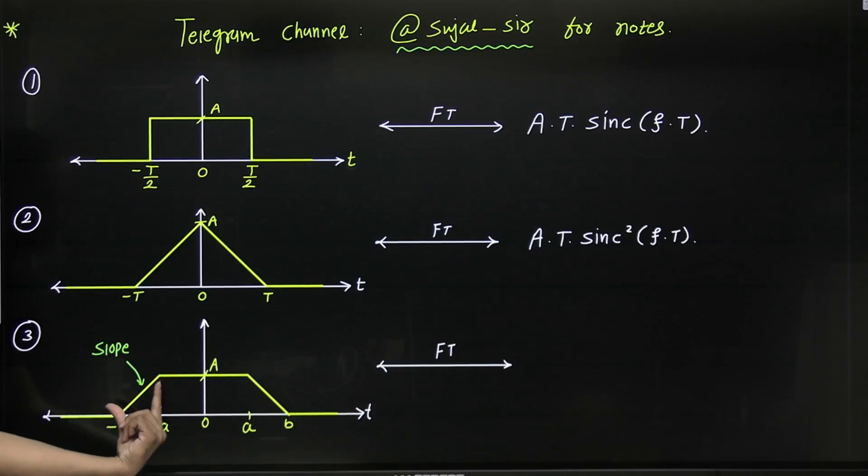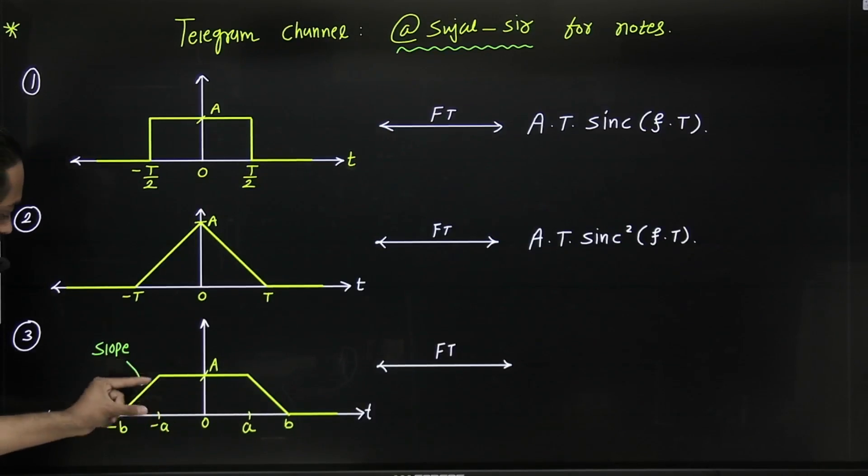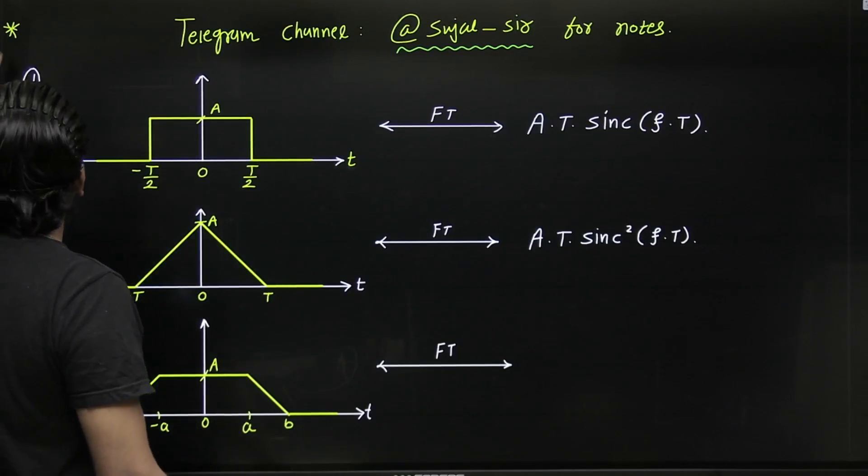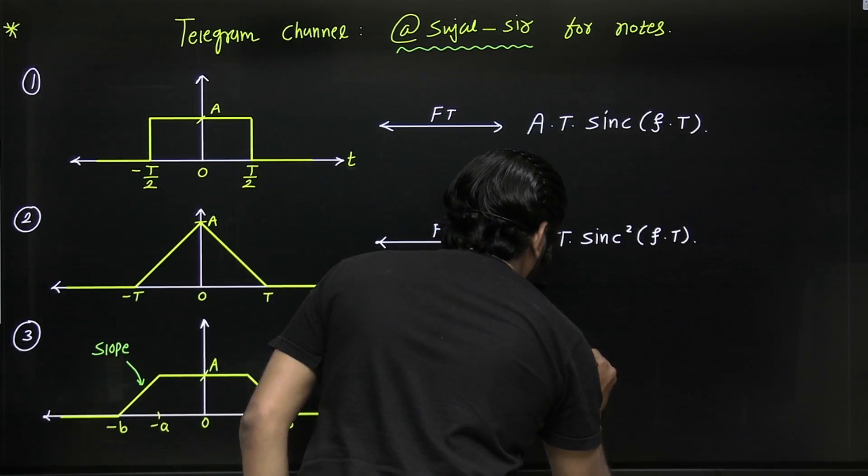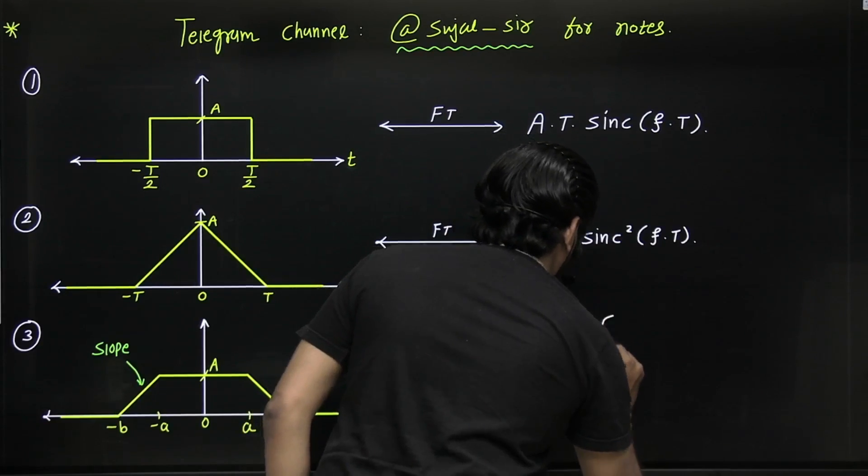So we have to find this slope. The slope can be easily found by dy by dx, a upon b minus a. So simply here two times the positive slope value into the bracket.